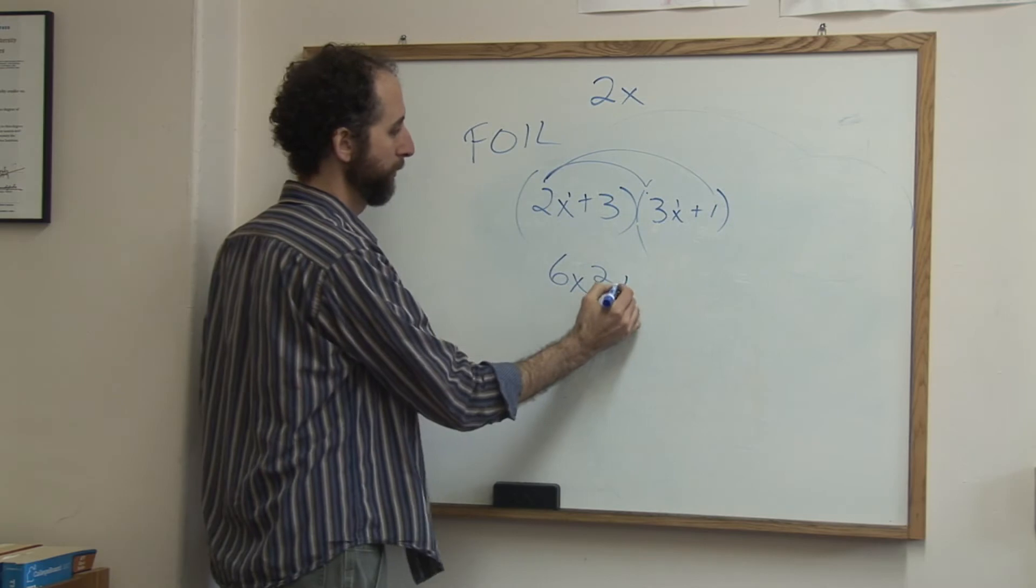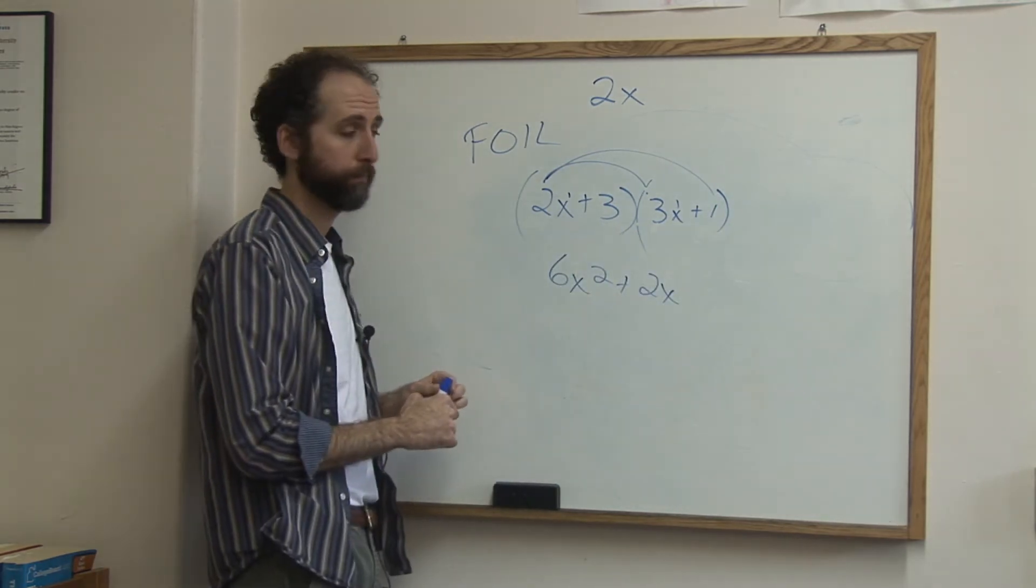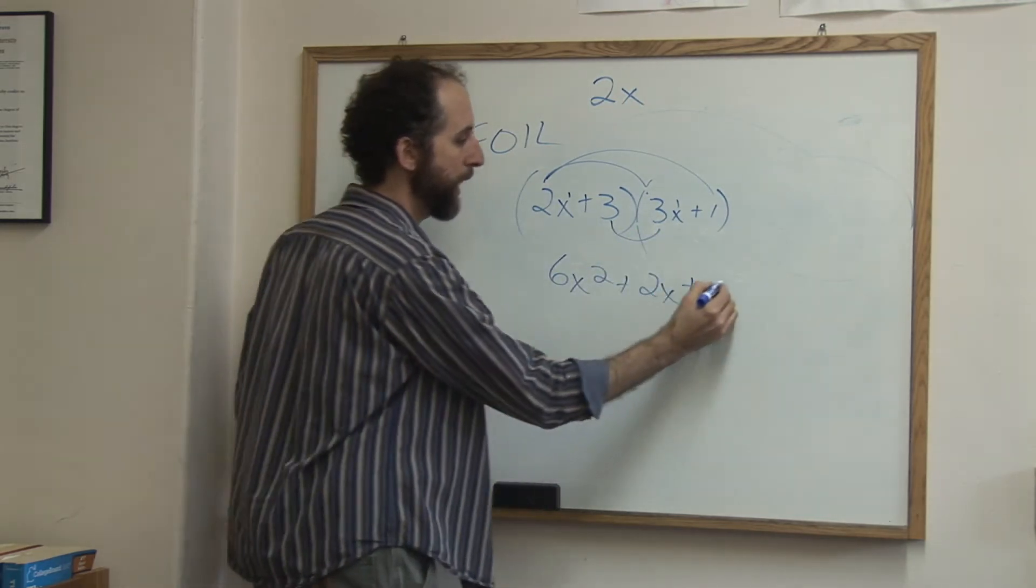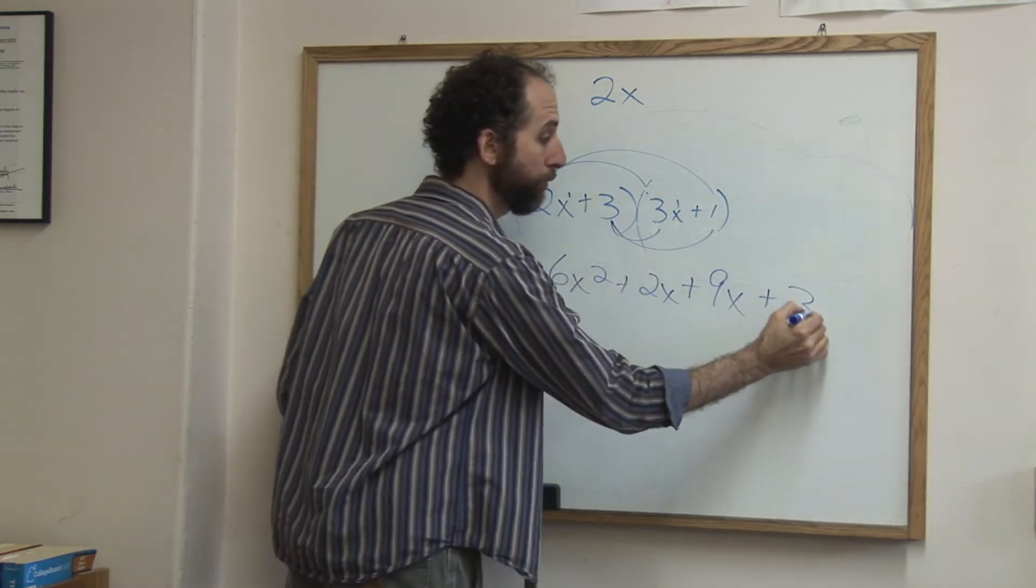Then we're going to do the outsides, and that gives me 2x. 2x times 1 is 2x. Then we're going to do the insides. 3 times 3 is 9, and there's the x. And we do the last part. 3 times 1 is 3.